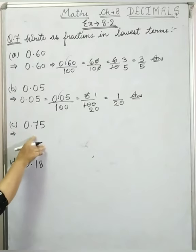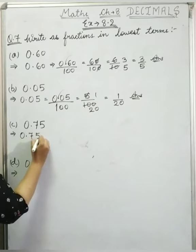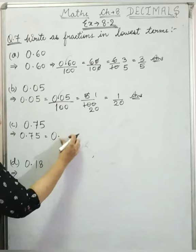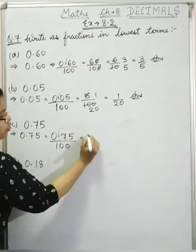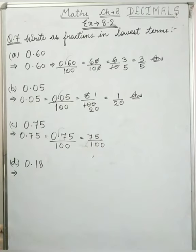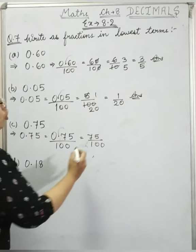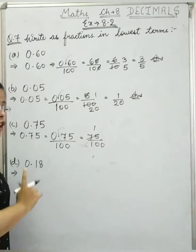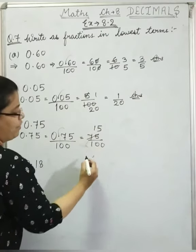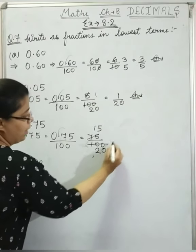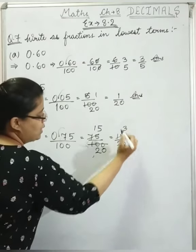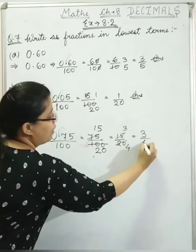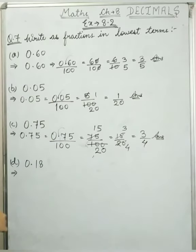Now next is c: 0.75. We remove the decimal; after the decimal there are 2 digits, so 2 zeros in the denominator: 75 upon 100. We can reduce this — both numbers are divisible by 5. Dividing: 5 times 15 is 75, and 5 times 20 is 100, giving us 15 upon 20. We can reduce again: 5 times 3 is 15, and 5 times 4 is 20. So the answer is 3 upon 4.